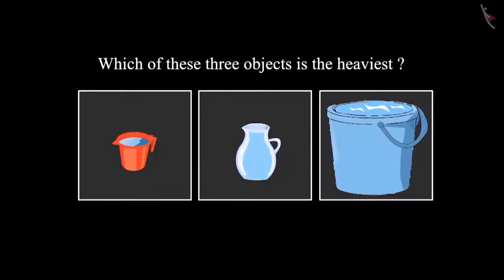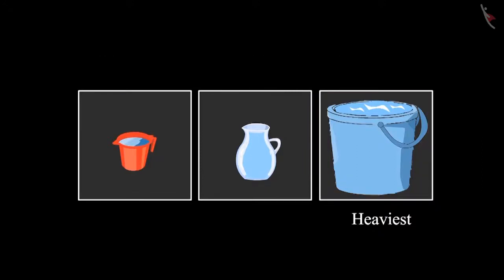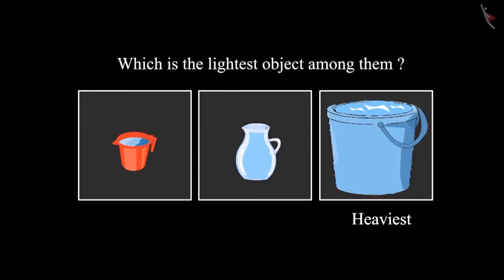So children, can you tell me which is the heaviest object among the bucket, jug, and mug? Yes — the bucket of water is the heaviest among these. And which is the lightest? The mug is the lightest among them.